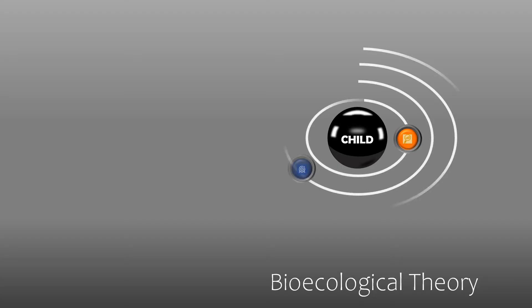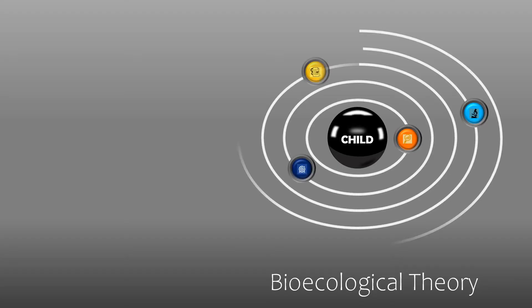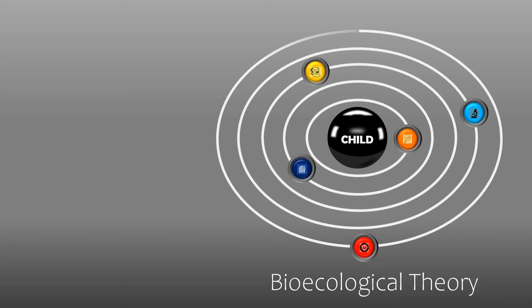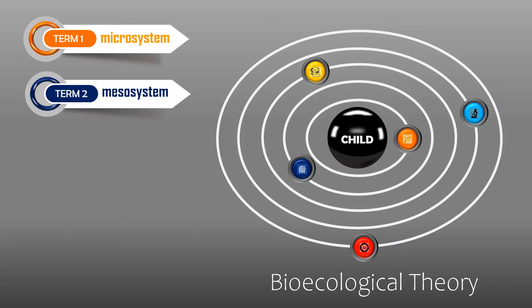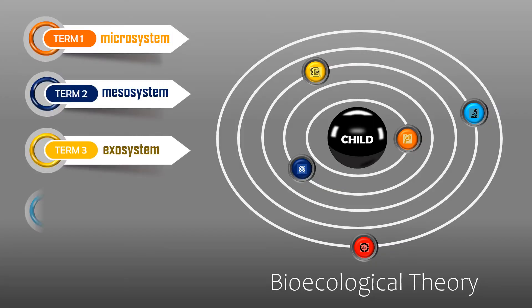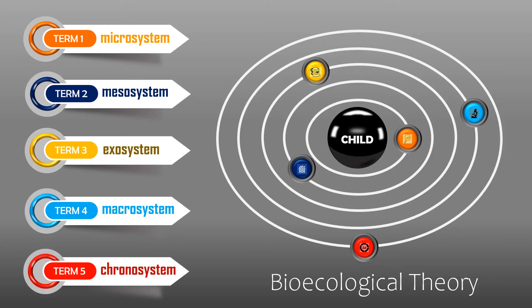Each layer is further made up of different structures. The term bioecological points out that a child's own biological makeup impacts as a key factor in one's development. Here are the systems of the bioecological model: Microsystem, Mesosystem, Exosystem, Macrosystem, and Chronosystem.